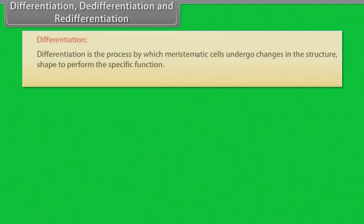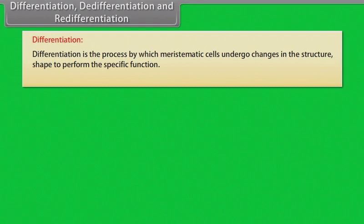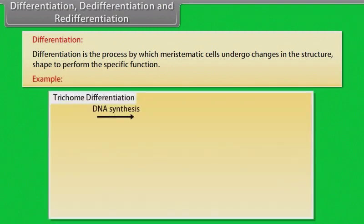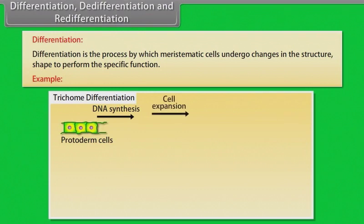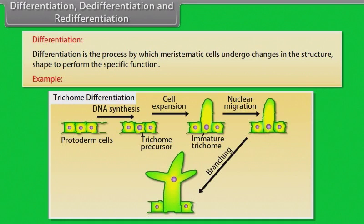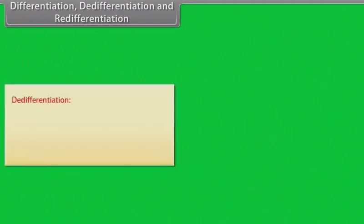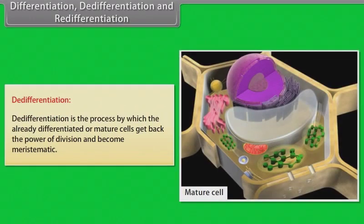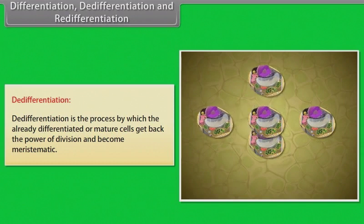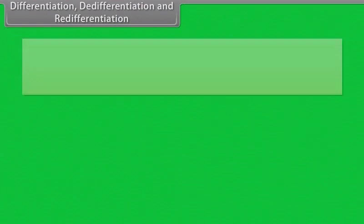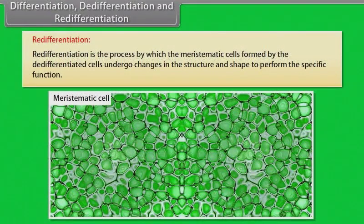Differentiation is the process by which meristematic cells undergo changes in structure and shape to perform specific functions. For example, after the DNA synthesis of the protoderm cells, cell expansion takes place and it forms immature trichome. After that, nuclear migration takes place, then branching occurs, and then it reaches the maturation stage. De-differentiation is the process by which already differentiated or mature cells get back the power of division and become meristematic.